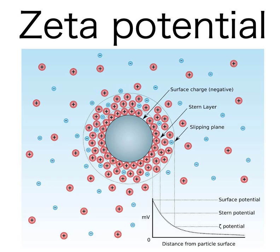Electrokinetic phenomena and electroacoustic phenomena are the usual sources of data for calculation of zeta potential. Electrophoresis is used for estimating zeta potential of particulates, whereas streaming potential or current is used for porous bodies and flat surfaces. In practice, the zeta potential of a dispersion is measured by applying an electric field across the dispersion. Particles with a zeta potential will migrate toward the electrode of opposite charge with a velocity proportional to the magnitude of the zeta potential. This velocity is measured using the technique of laser Doppler anemometry. The frequency shift or phase shift of an incident laser beam caused by these moving particles is measured as the particle mobility, and this mobility is converted to the zeta potential by inputting the dispersant viscosity and dielectric permittivity, and the application of the Smoluchowski theories.